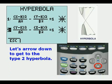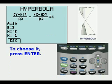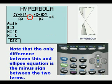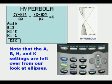Let's arrow down to get to the type 2 hyperbola and to choose it we press Enter. Note that the only difference between this and the ellipse equation is the minus sign between the two terms. Note that the A, B, H, and K settings are left over from our look at ellipses.